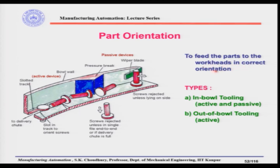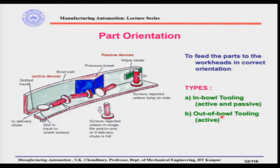Our next topic is part orientation. Parts have to be fed to automatic assembly machines from bowl feeders in the right orientation. There must be some kind of orienting devices so that parts can be fed in the right orientation in case they are not coming in the correct orientation at the bowl feeder exit. Basically, to feed parts to the workheads in correct orientation, there are two types of orienting devices: one called in-bowl tooling and the other called out-of-bowl tooling.